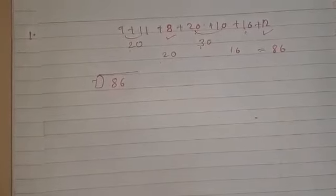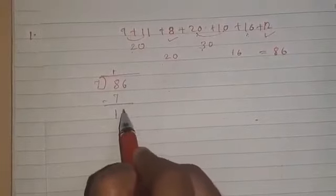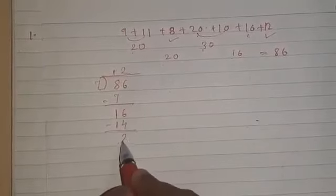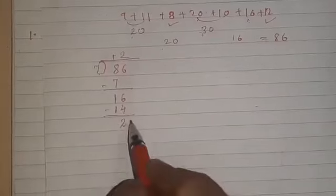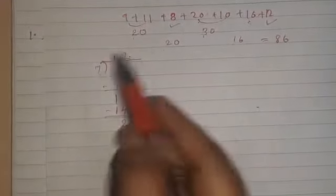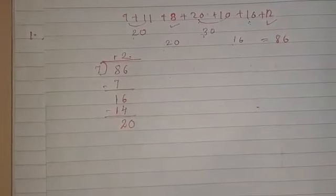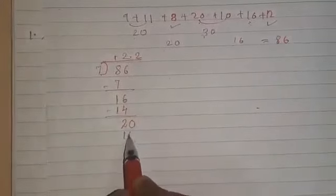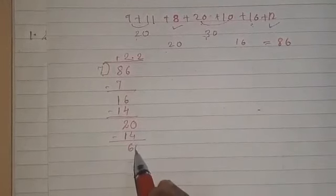Now we use the 7 times table. 7 ones are 7, remainder 1. Take 6 down — 7 twos are 14, remainder 2. There is no other number to take down, so we add a 0 and give a decimal point here. 7 twos are 14 and 7 threes are 21 — 21 is greater, so we use 7 twos: 14. 20 minus 14 gives 6. Again add a 0.